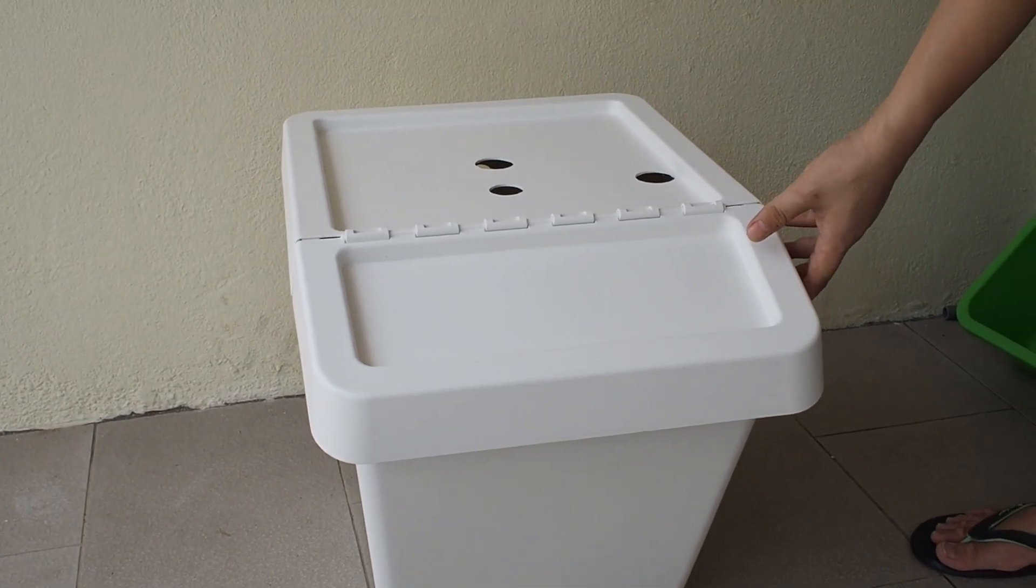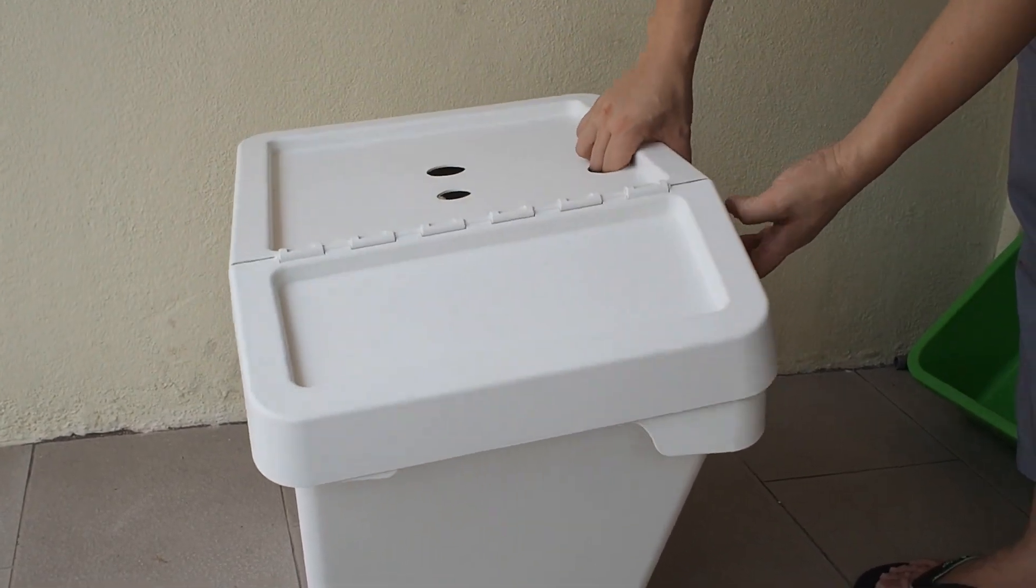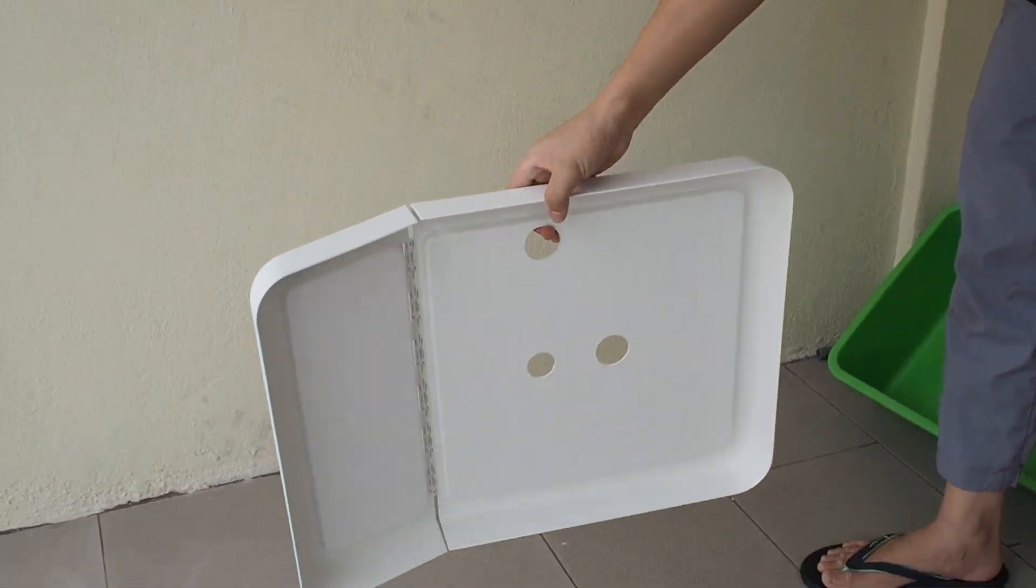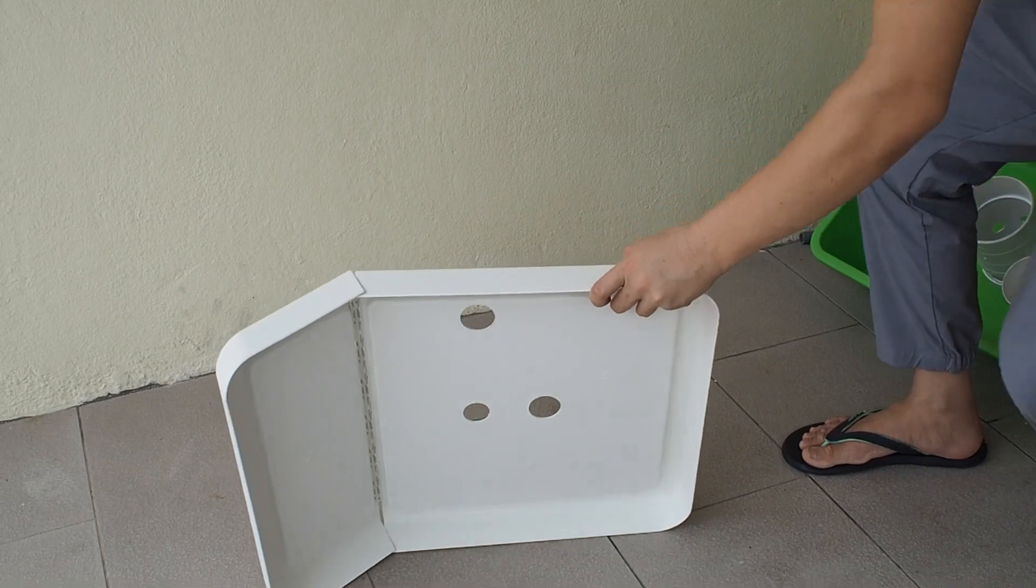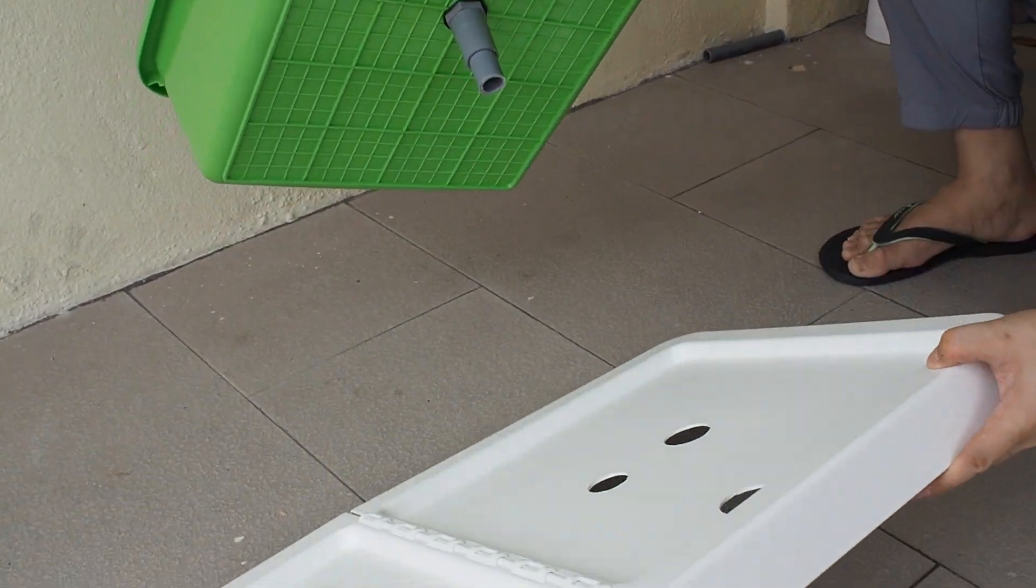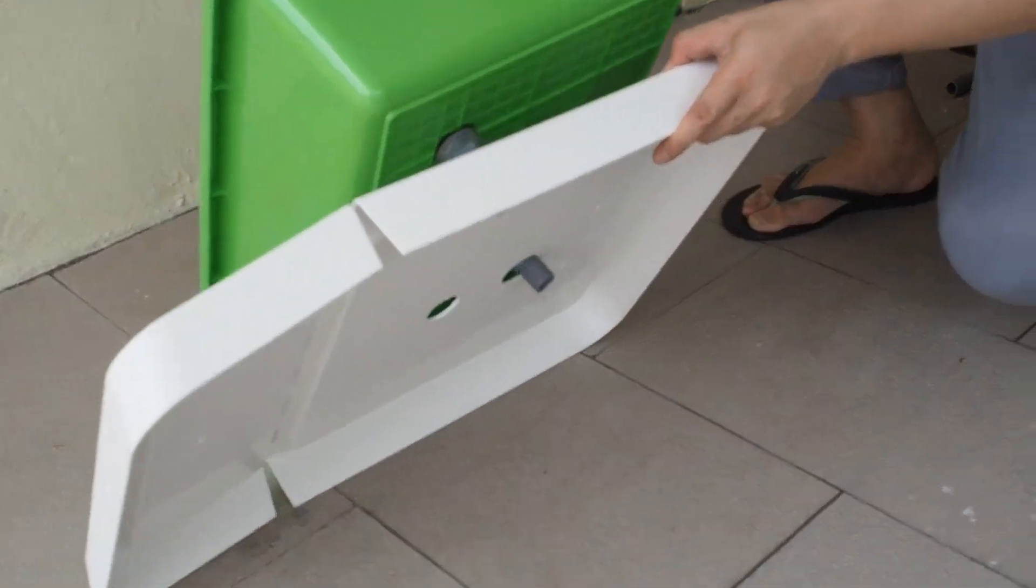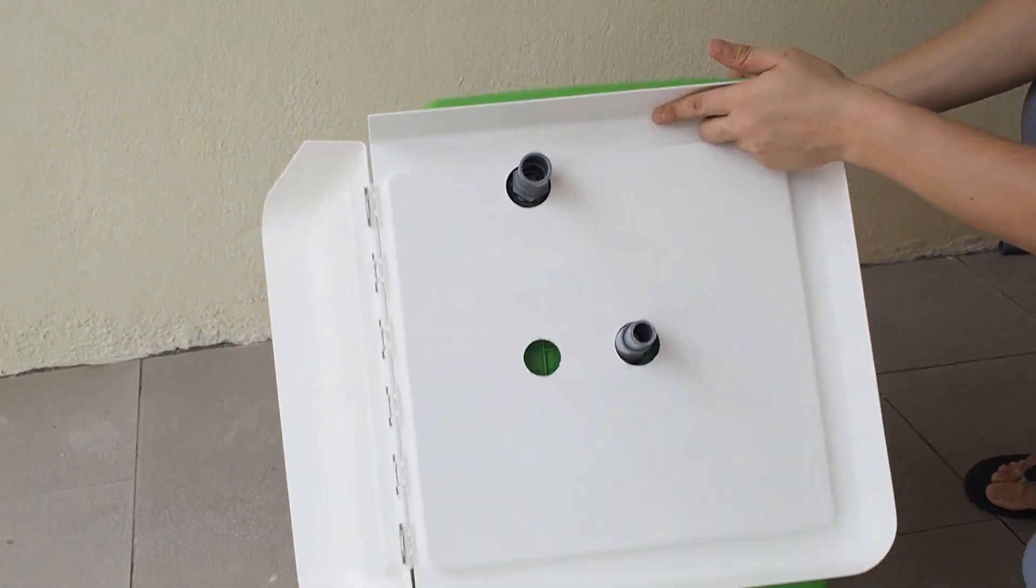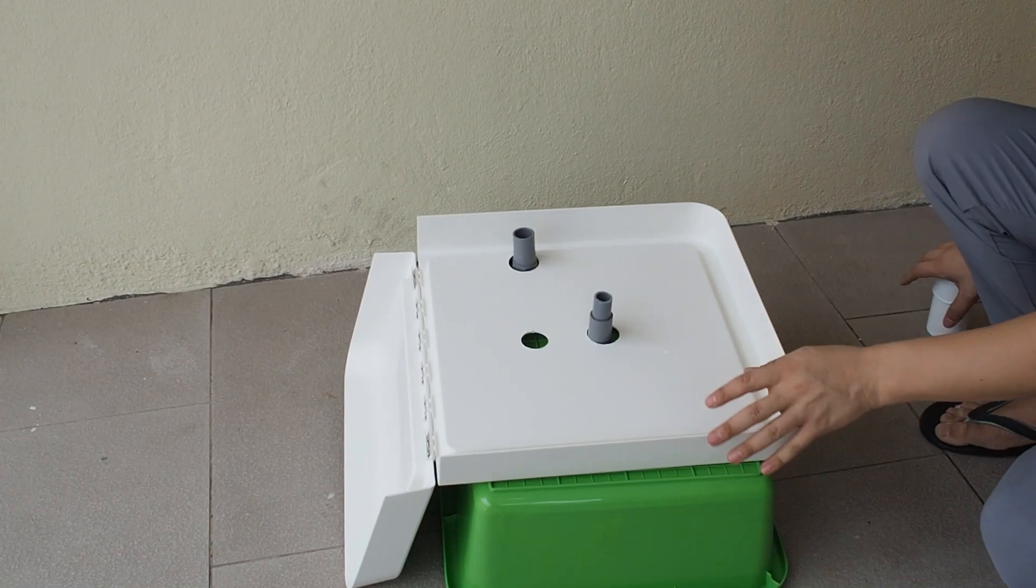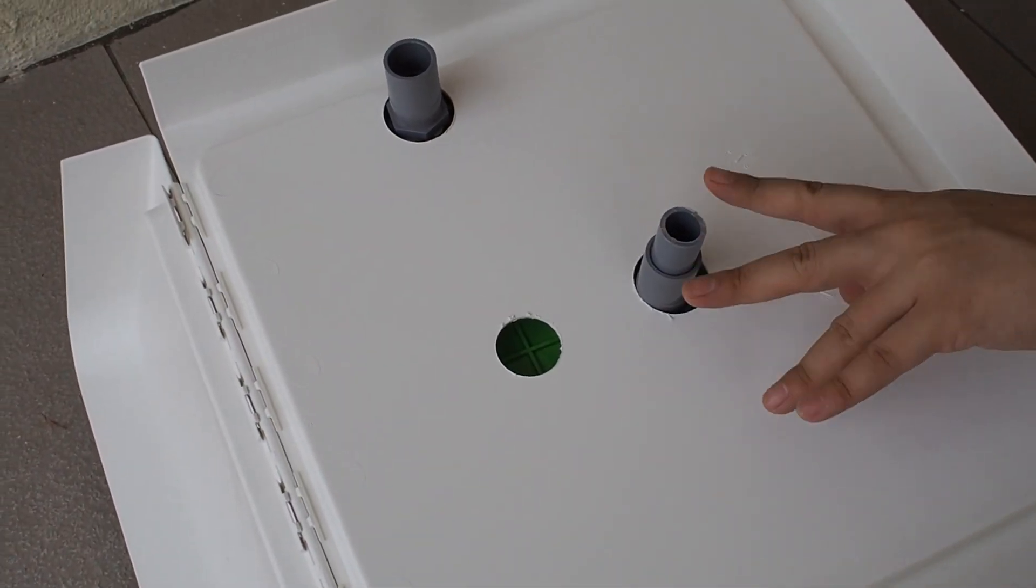We will start to assemble the grow bed to the fish tank. First of all, we will have to take out this tank and we just use this lid first. Then we take this part, the grow bed part that we just assembled with the base and also the tower. After that, we can see something like this at the bottom. This one is to connect with the pump.